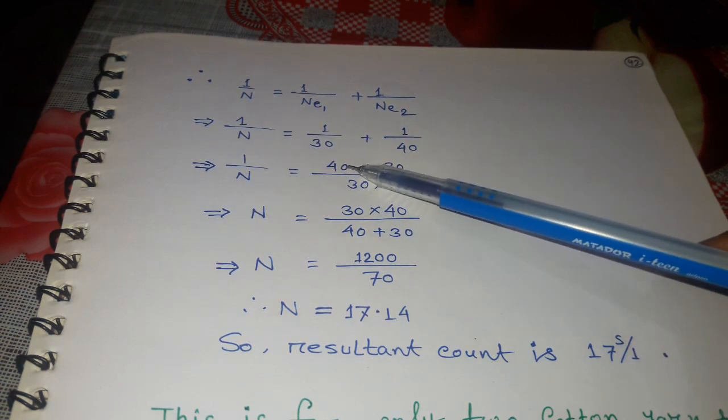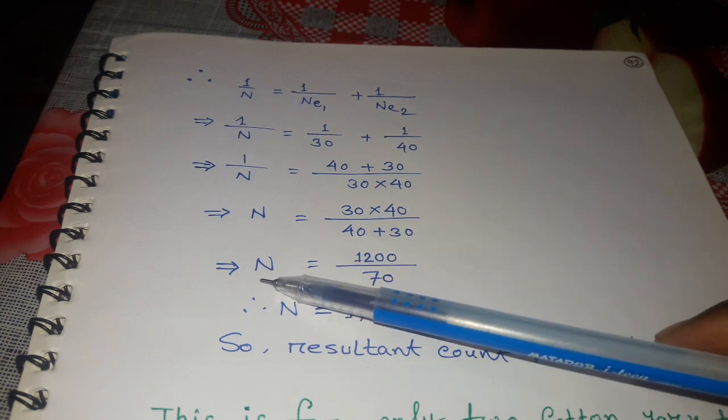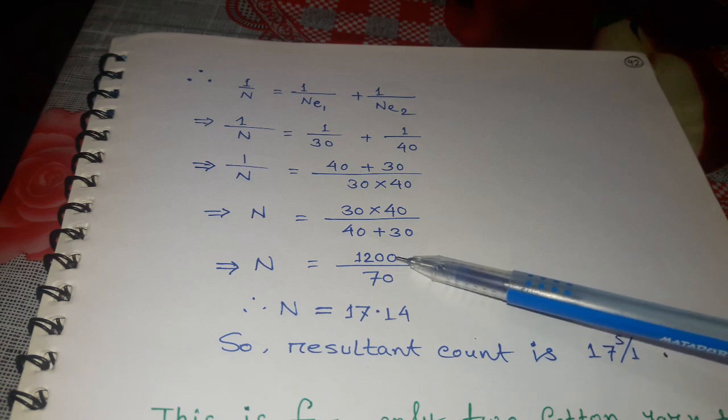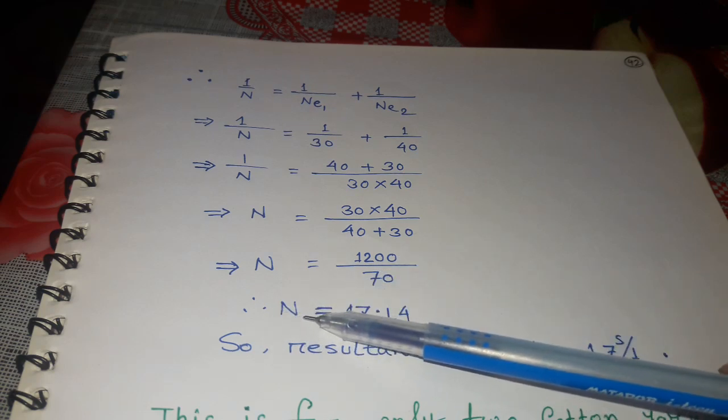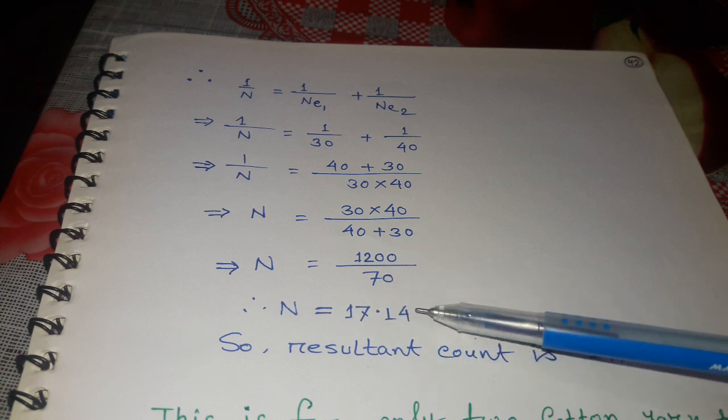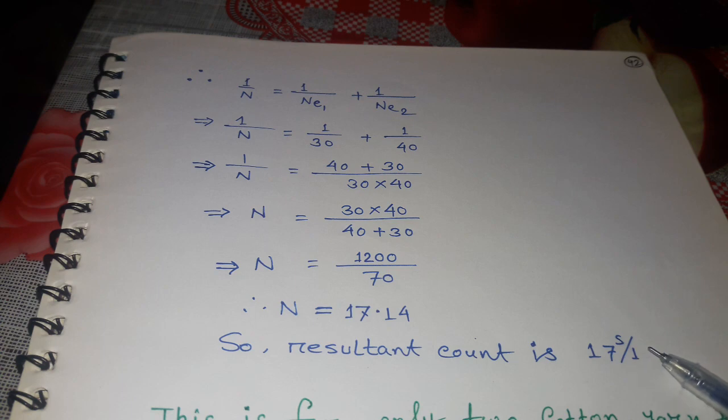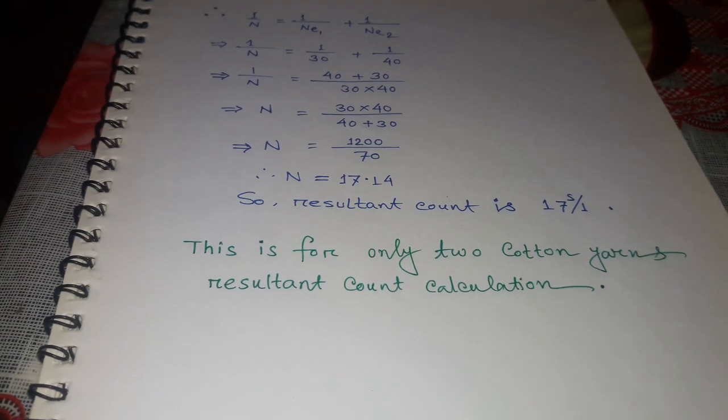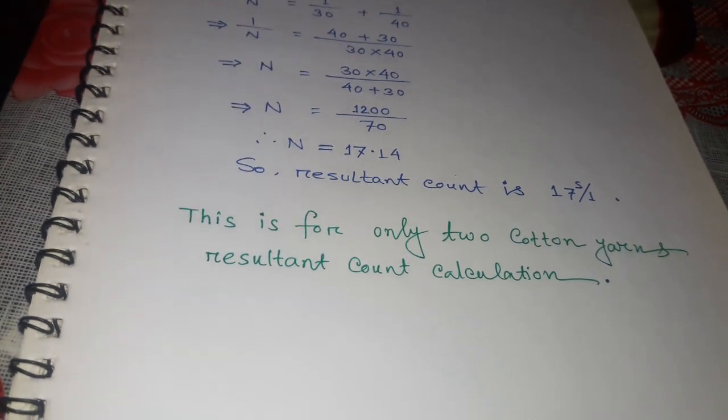N = 1200/70, so N = 17.14. Therefore, the resultant count is 17 single. This calculation is for two cotton yarns.